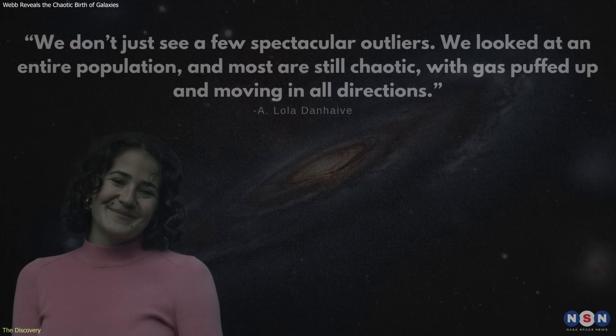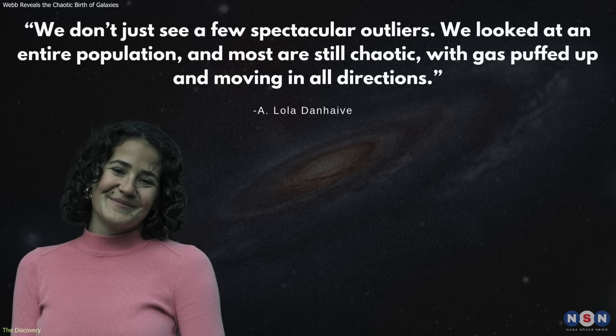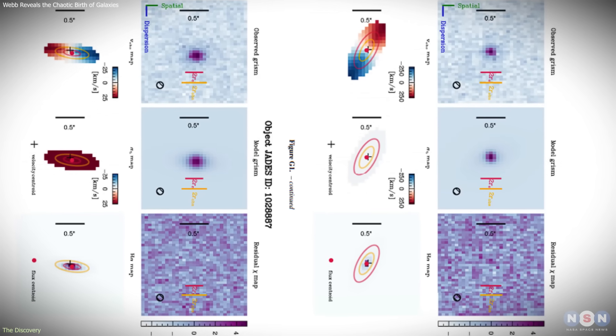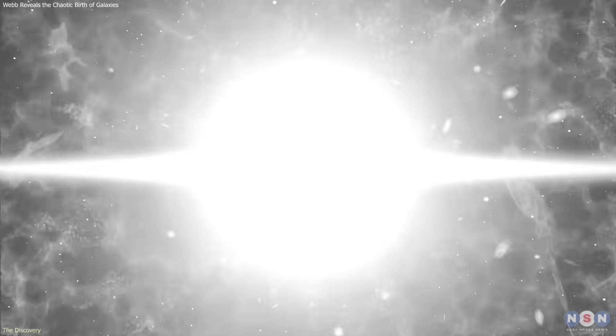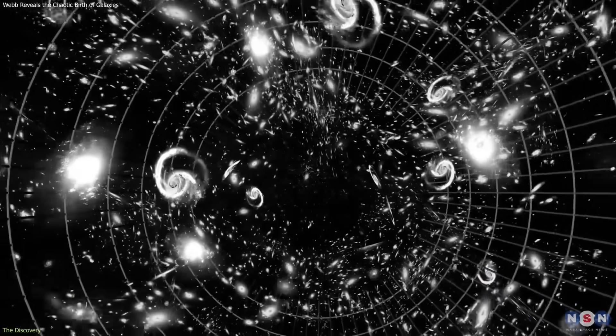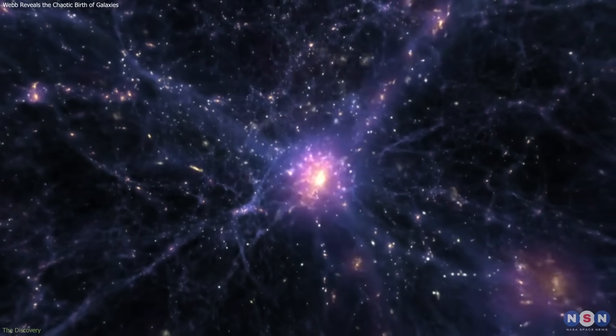As lead author Lola Dan Have put it, we don't just see a few spectacular outliers. We looked at an entire population, and most are still chaotic, with gas puffed up and moving in all directions. This is the clearest statistical view we've had of early galactic behavior. It shows that the universe in its first billion years wasn't made up of elegant spirals. It was dominated by dynamic, turbulent systems still trying to settle.